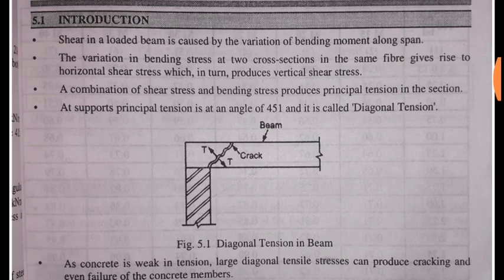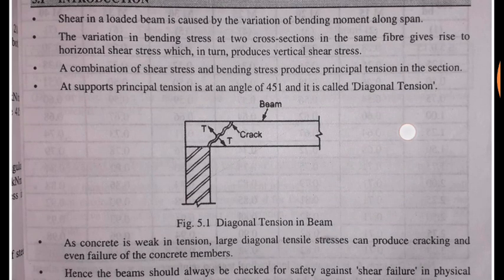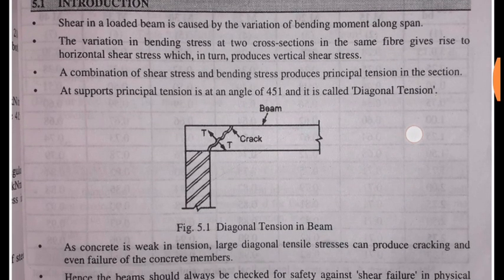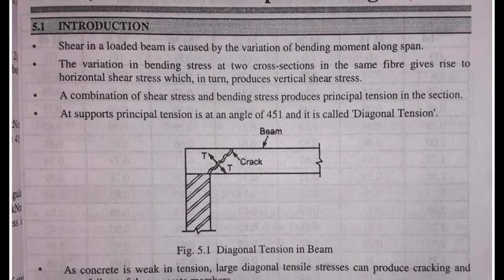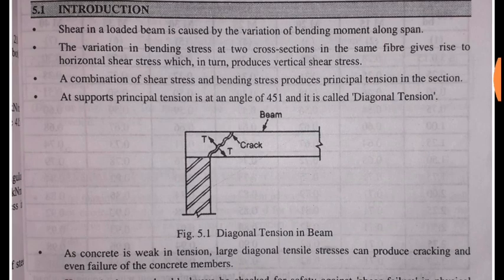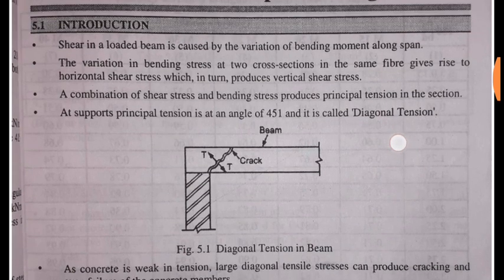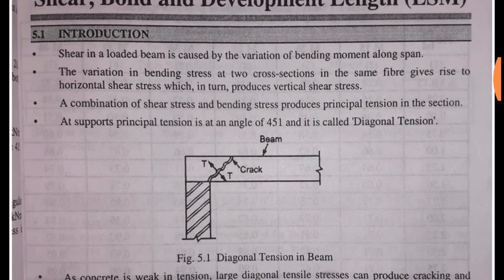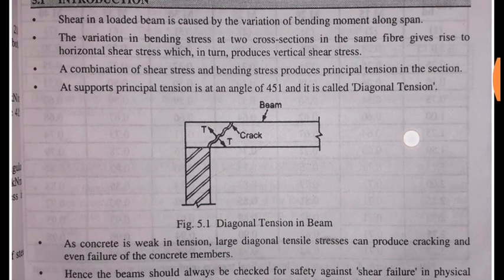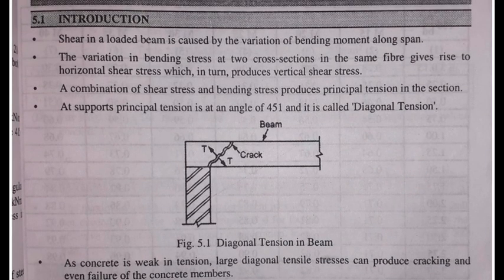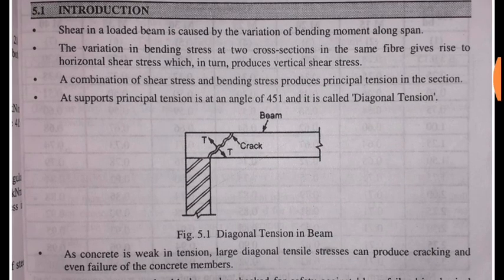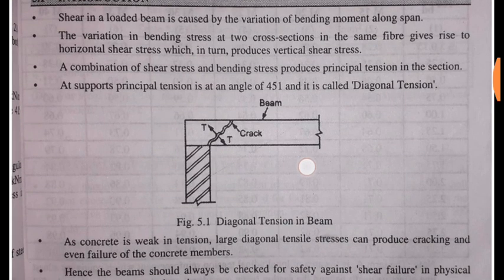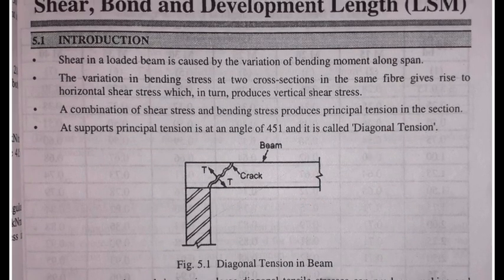Bending stress is developed in the horizontal direction, so in the direction of the horizontal there is a vertical stress. You know that concrete is in compression, but the tensile load — concrete is not able to take the tensile load, so we provide steel in beams or columns because the concrete is very weak in tension.